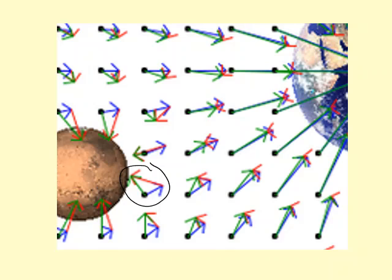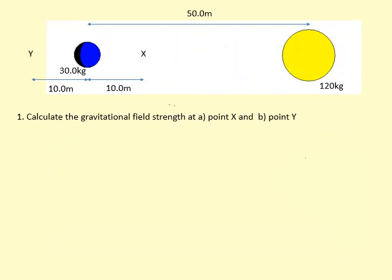You can see, for example, in this region here, the gravitational field is probably going to be zero because forces act in opposite directions so they'll cancel out.